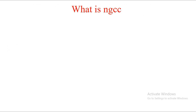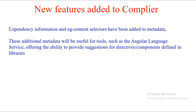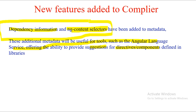The third new feature is added to the compiler: dependency information and `ng-content` selectors are now added to metadata. These additions are useful tools for Angular Language Services. The dependency information will provide suggestions for Angular-dependent directives and components in your library. This bridges your component and template more easily by providing dependency information through extra metadata appended in the compiler.